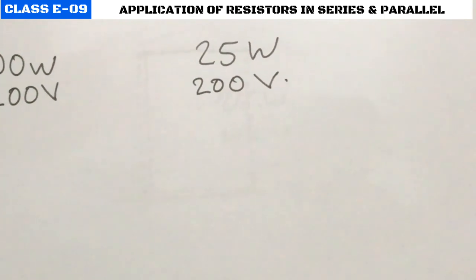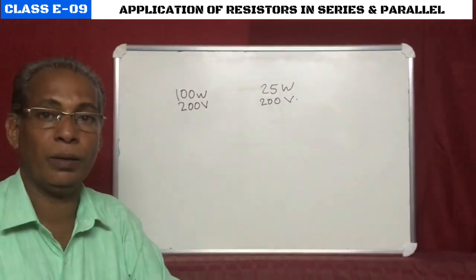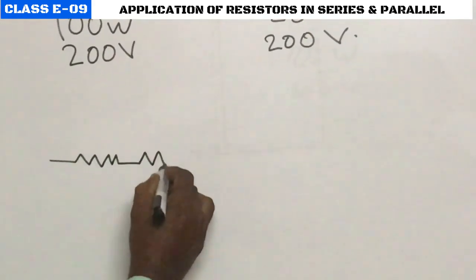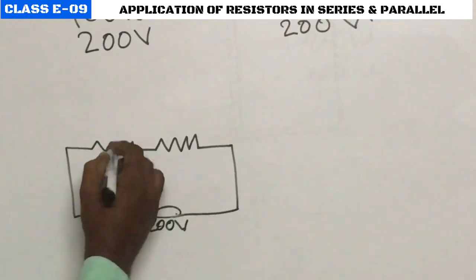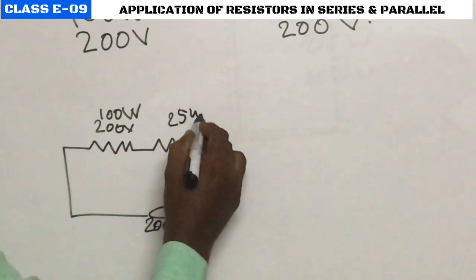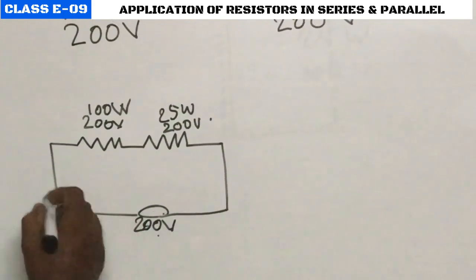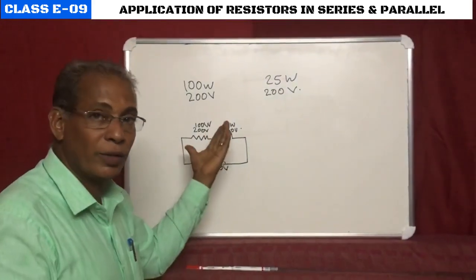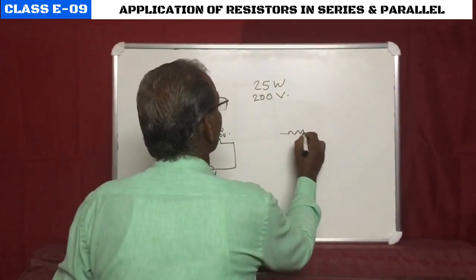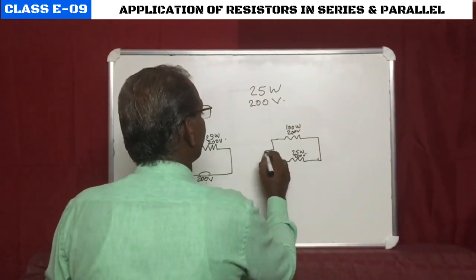We have to connect these two bulbs — 100W/200V and 25W/200V — first in series, then in parallel. We draw the circuit diagram for the series connection first, then the parallel connection with the same two bulbs connected in parallel across the supply.